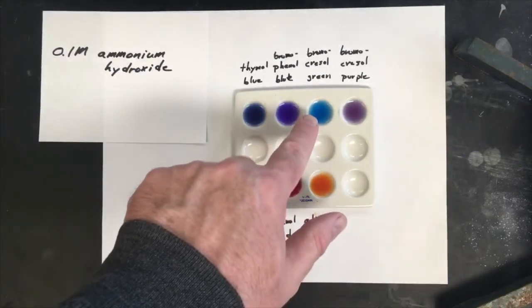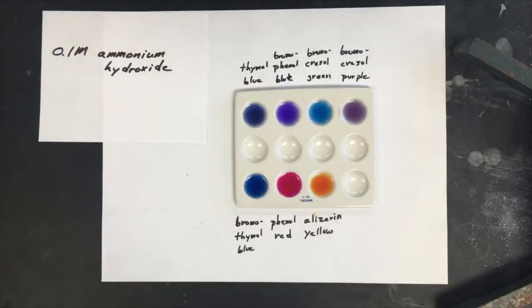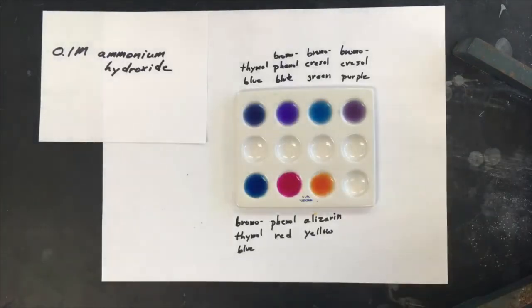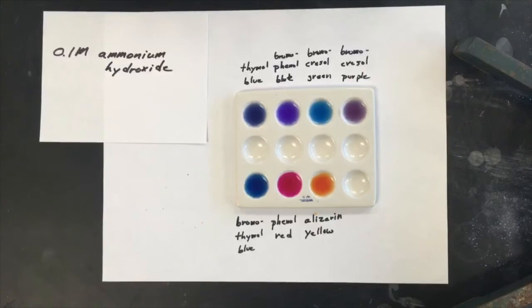Everything looks pretty good. I might have another little piece of rubber in the bromocresol green well. Let's zoom in so you can see a little bit better what's going on.